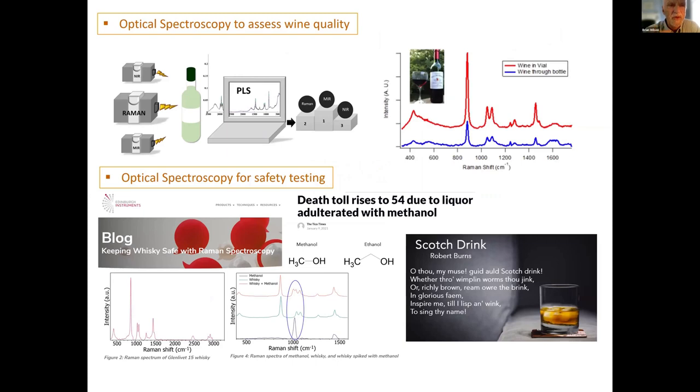The top example is optical spectroscopy to assess the quality of wine. You can do this through the bottle. This case is Raman spectroscopy, which is inelastic light scattering. The light is interacting with the vibrational states of the molecules. It's a very sensitive and specific way of looking at the quality of the material, in this case the wine.